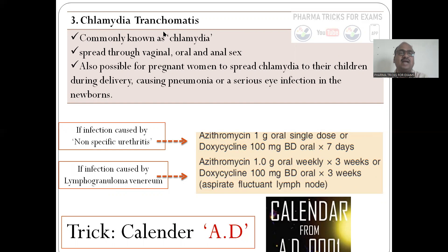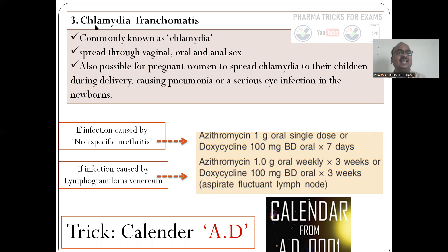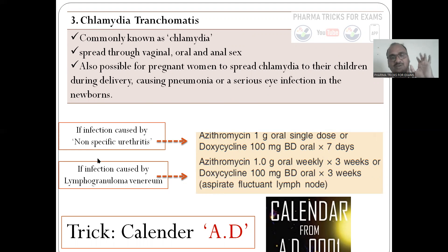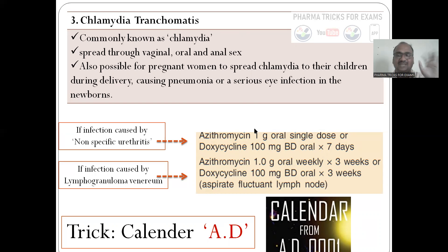For Chlamydia trachomatis, the mnemonic is AD — like the AD calendar (BC and AD). AD stands for Azithromycin (A) and Doxycycline (D). For nonspecific urethritis, give treatment for a certain period. If the infection is specifically lymphogranuloma venereum, then give the same drugs for three weeks.